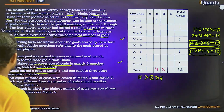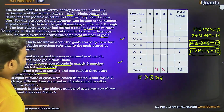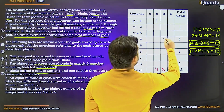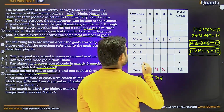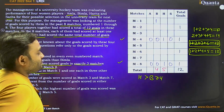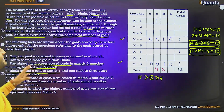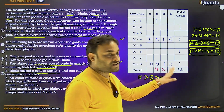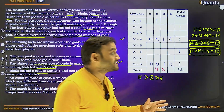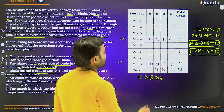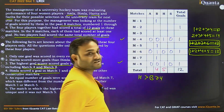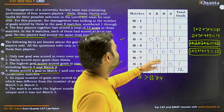Harita is the highest goal scorer with 5 goals, and scored in exactly 3 matches including match 4 and match 8. So in match 4: Harita scores 1 goal, all others 0. In match 8: Harita scores 1 goal, all others 0. The 3 other consecutive matches for Bimla — excluding match 1 — can only be matches 5, 6, and 7. So in match 6, Bimla scored 1 goal and others scored 0, since total goals in that match is exactly 1.